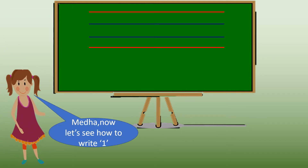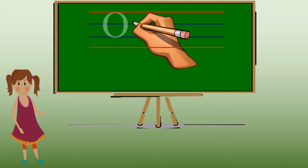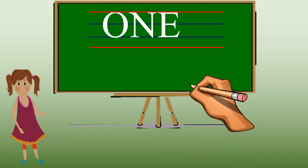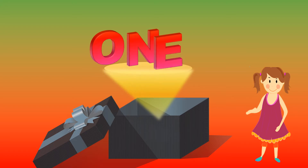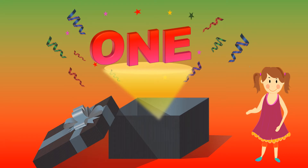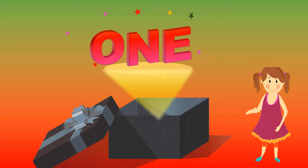Can you now show us how to write the number 1? Let's see how to write it. O-N-E, 1. Now I have got a surprise for you — what's in this box? Let's see. O-N-E, 1. Now I know how to spell and write 1. Hooray!